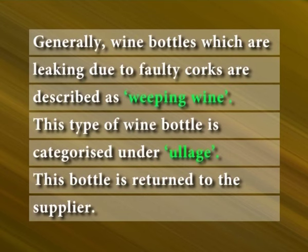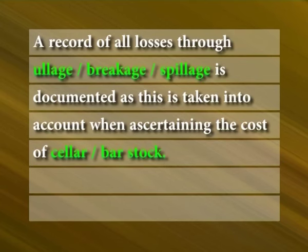Generally, wine bottles which are leaking due to faulty corks are described as weeping wine. This type of wine bottle is categorized under ullage. This bottle is returned to the supplier. In case of bottles breaking in the cellar or bar, the neck of the bottle with the sealed cap intact is kept for accounting purposes. A record of all losses through ullage, breakage, or spillage is documented, as this is taken into account when ascertaining the cost of cellar or bar stock.